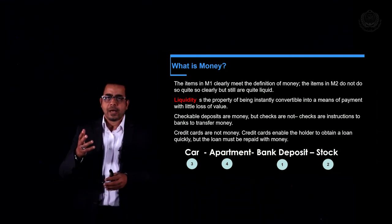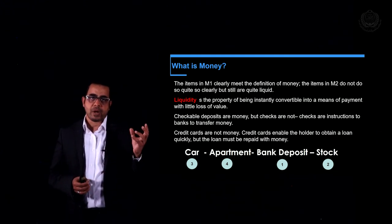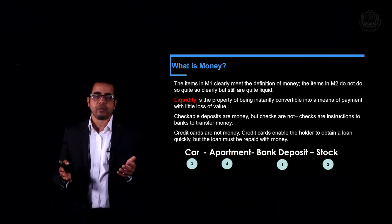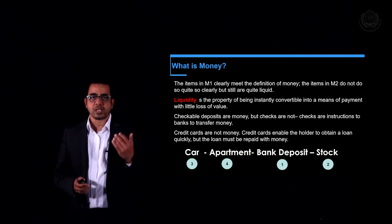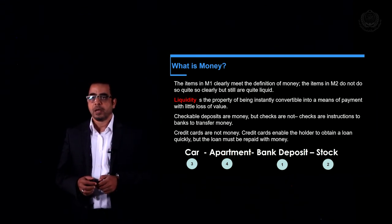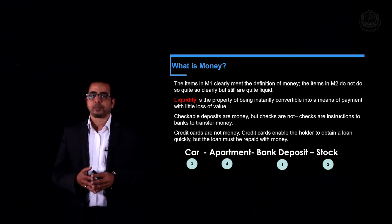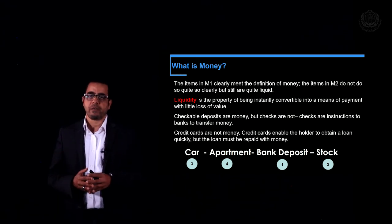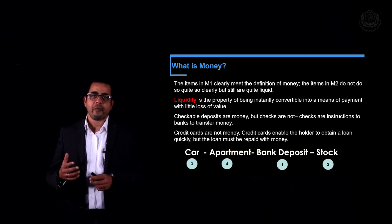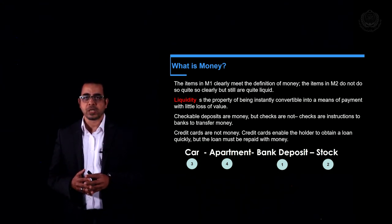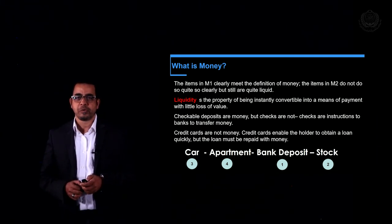An important clarification: checkable deposits are money, but checkbooks and checks themselves are not money. Credit cards are not money — the deposits behind the credit cards are the money. Now in this unit we know the definition of money, the functions of money, and what we mean by liquidity. We are now ready to learn more about deposit institutions and their role in the economy in the next unit.